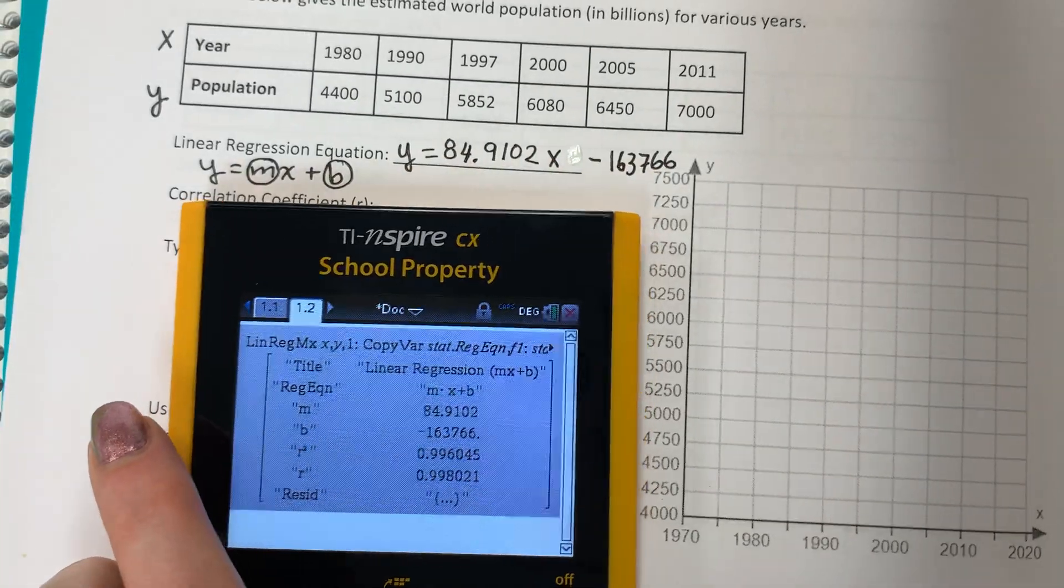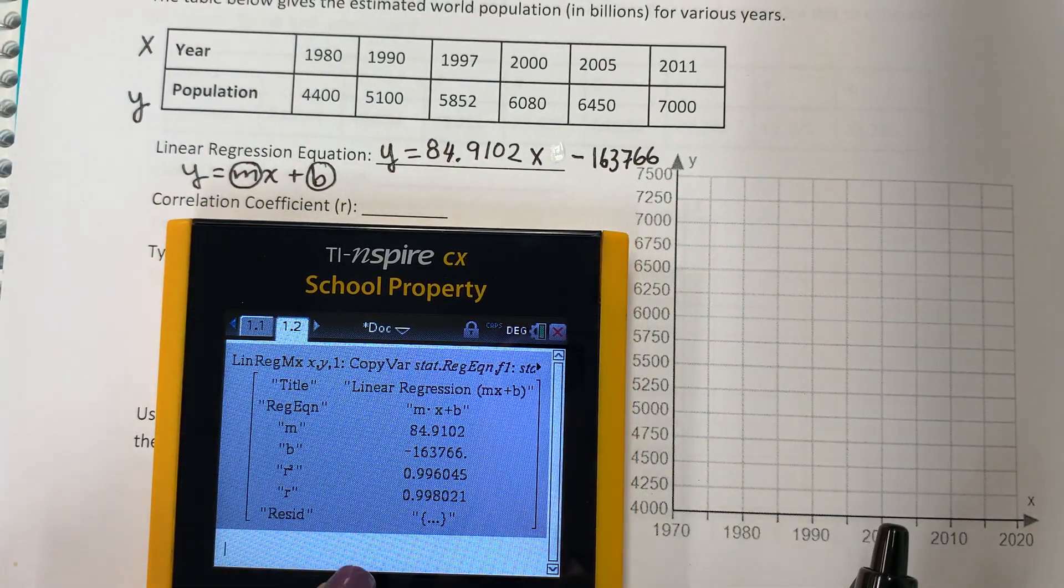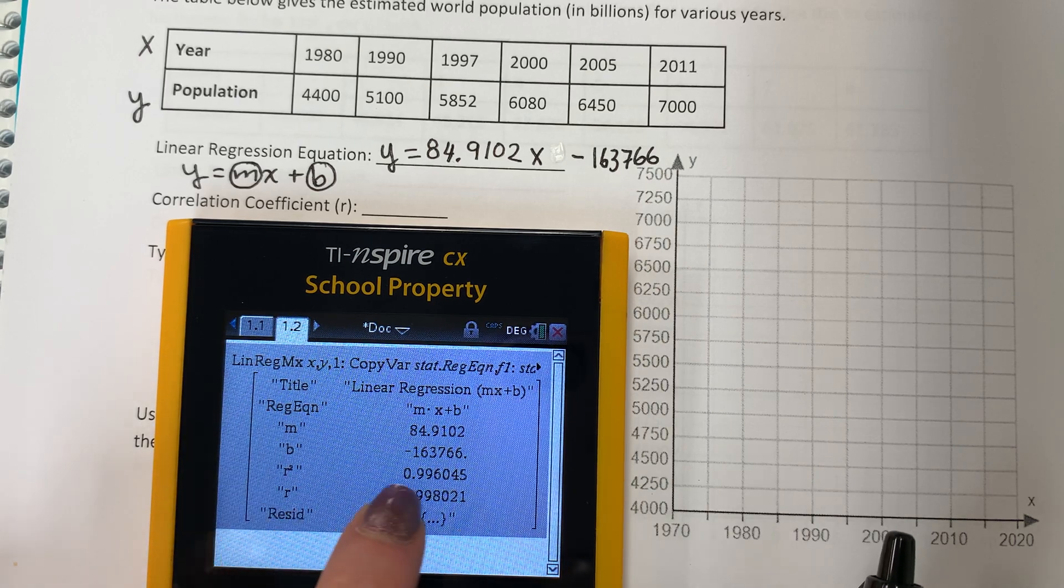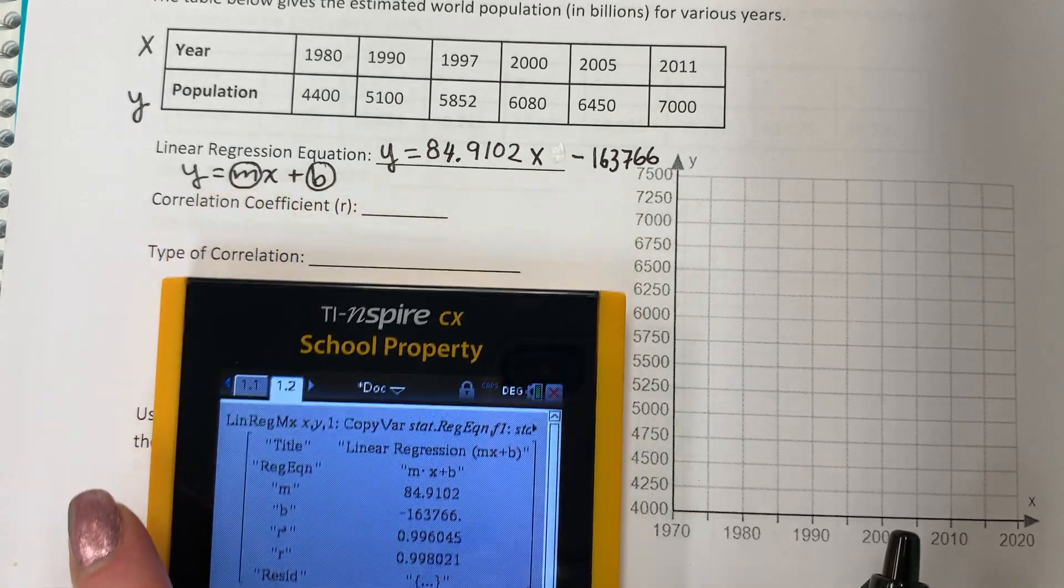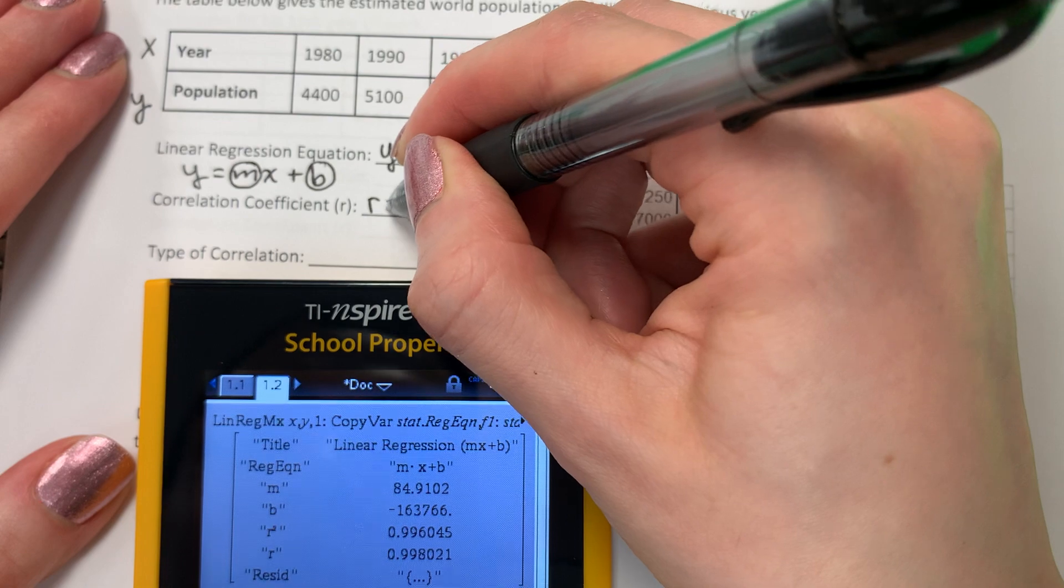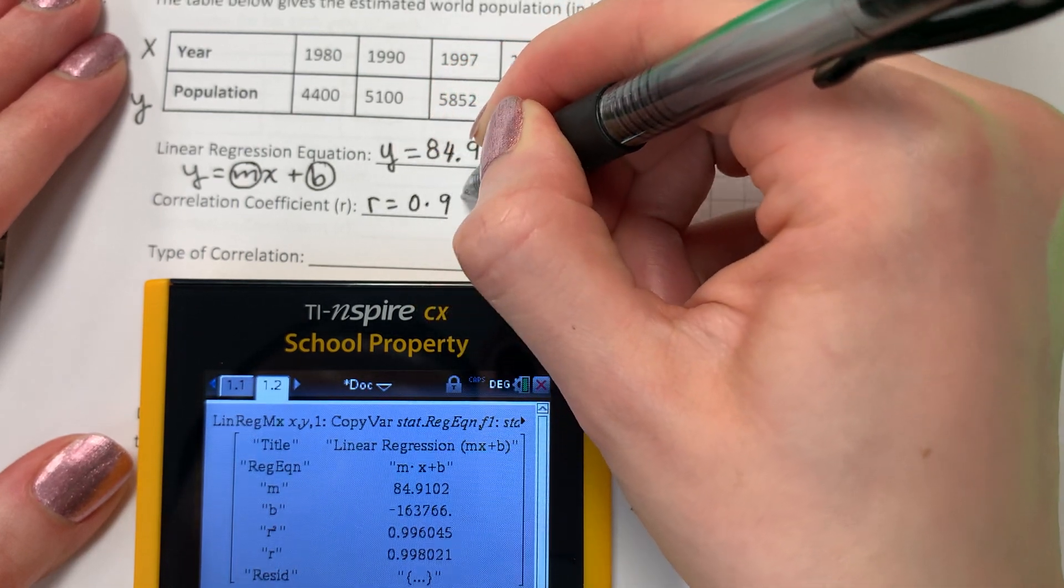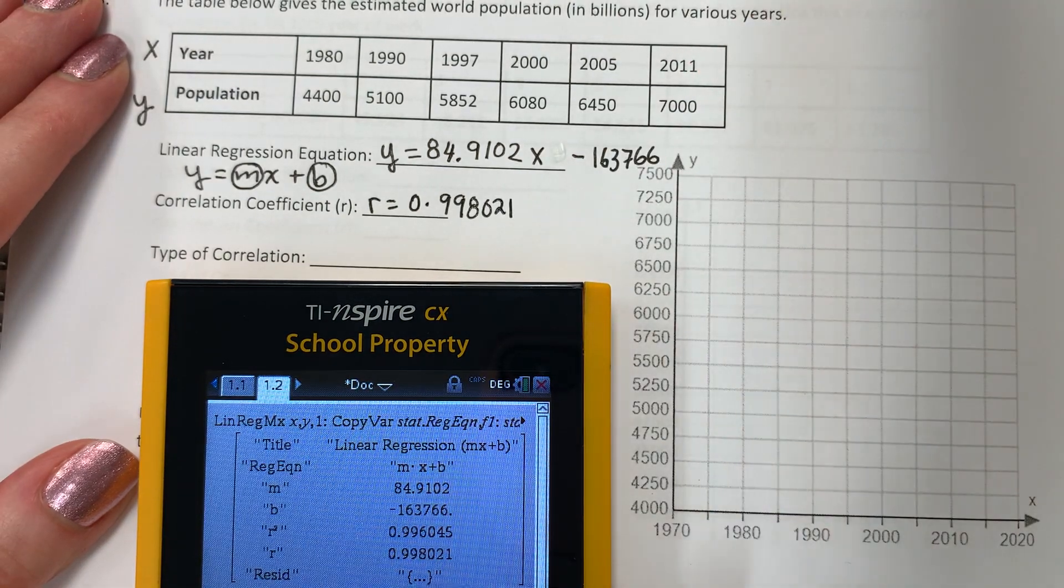Let's see the correlation coefficient. Correlation coefficient is R. Correlation coefficient is the regular R. La R regular. So 0.998021. Let's go ahead and write that down. R equals 0.998021.